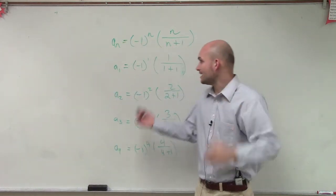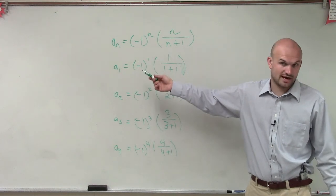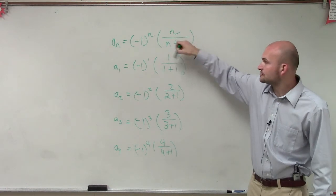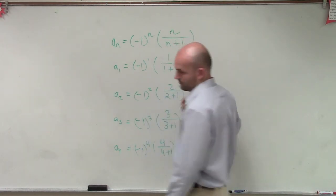Now, please understand, negative 1 to the first power just means negative 1 multiplied by itself one time, which is just negative 1, right? And then 1 divided by 1 plus 1 is 1 half. So therefore, this answer is going to equal negative 1 half.